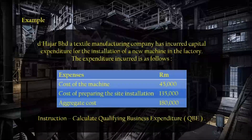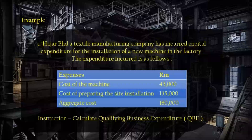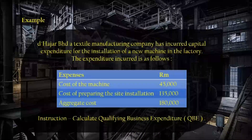Dehajar Berhuda textile manufacturing company has incurred capital expenditure for the installation of a new machine in the factory. The expenditure incurred is as follows: cost of the machine RM 45,000; cost of preparing the site and installation RM 135,000; aggregate cost RM 180,000. Instruction: calculate qualifying business expenditure (QBE).